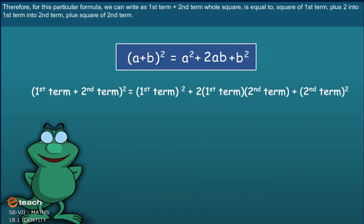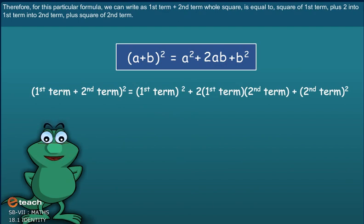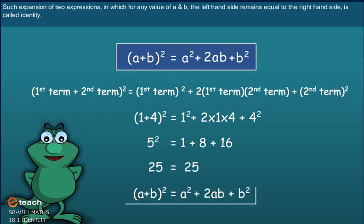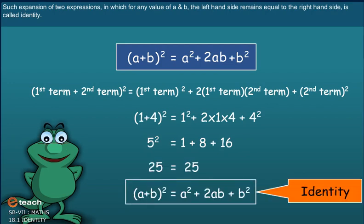Therefore, for this particular formula, we can write: first term plus second term, whole square, is equal to square of first term plus 2 into first term into second term plus square of second term. Such an expansion of two expressions in which, for any value of A and B, the left-hand side remains equal to the right-hand side is called an identity.